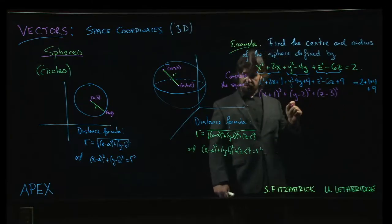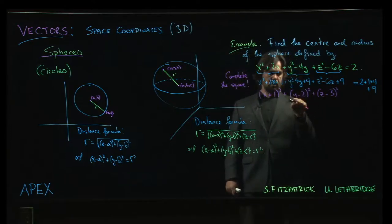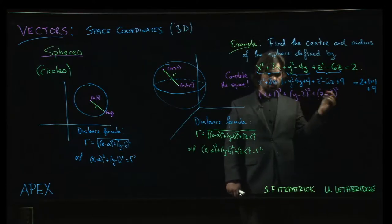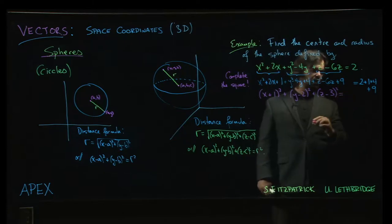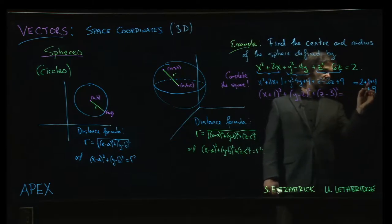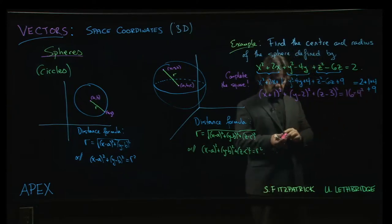We take half of that term in each case because remember when you foil out a square like this, you get 2 times y and then another 2 times y when you do the cross term. And on the other side, we've got 2 plus 1 plus 4 plus 9. All together that is 16 and 16 is 4 squared.